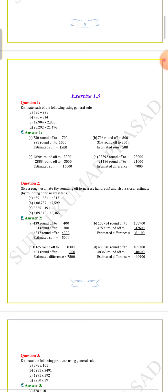439 rounds off to 400 when rounding to the nearest hundreds. 334 rounds off to 300. 4,317 rounds off to 4,300. The estimated sum will be 5,000. This is the approximate value of the actual value.